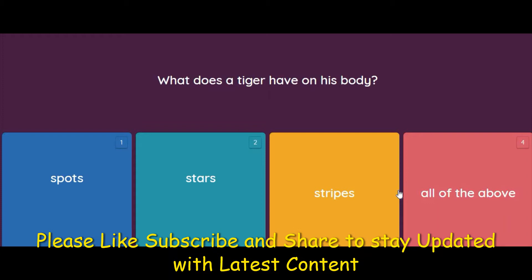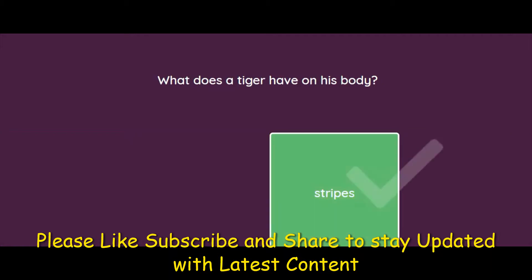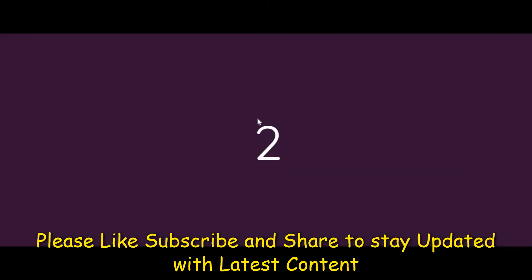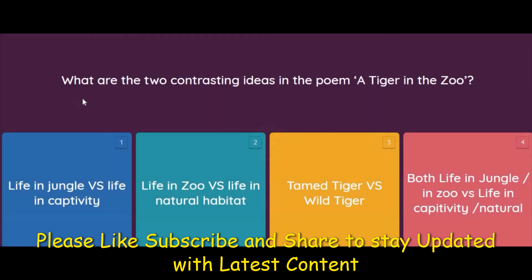It's an easy one — the answer is stripes. What are the two contrasting ideas in the poem 'A Tiger in the Zoo'?